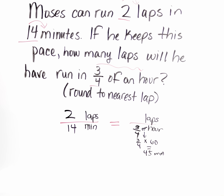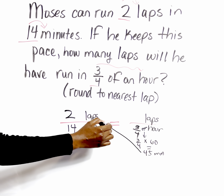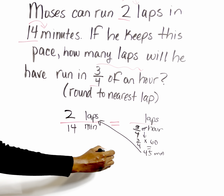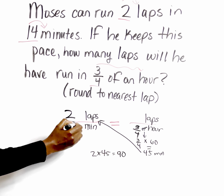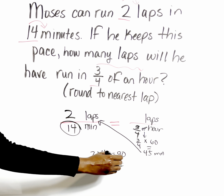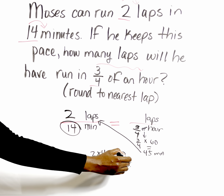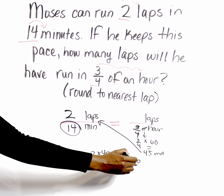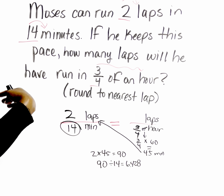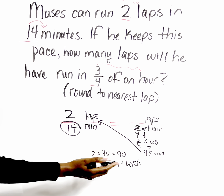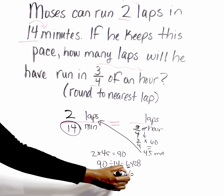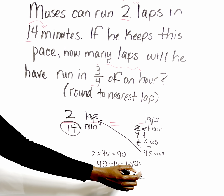And then from here, we're going to cross multiply where you have two values. So we say two times 45, which is equal to 90, and then you divide by the value that's left over. So we say 90 divided by 14, which gives us a long decimal like 6.428. But this question specifies that you need to round to the nearest lap, which means we're rounding to the nearest whole number. The four means the six stays the same. So six laps.